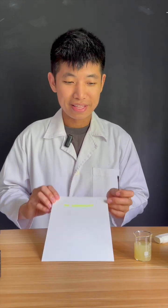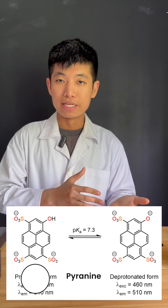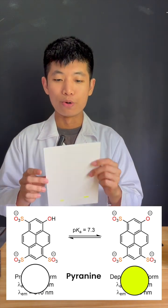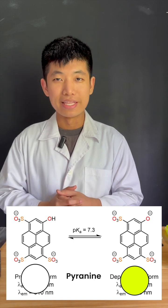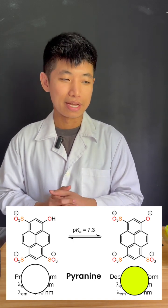What's going on? Highlighter ink actually contains an acid-base indicator known as pyranine which is colorless in acidic solutions and bright yellow in alkaline solutions. Lemon juice being acidic in nature would cause the highlighter ink to turn colorless.